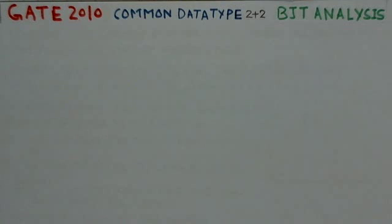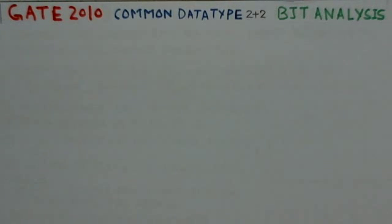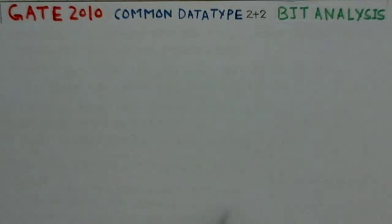The conceptual part of BJT analysis has been covered as part 4 of BJT circuits. Video solutions to the related gate problems are being uploaded now. Problems with diverse coverage are taken here and arranged in the chronological order of the year they appeared in the gate examination.